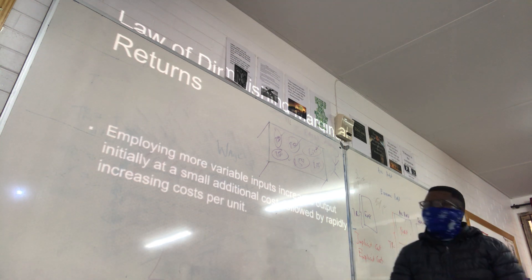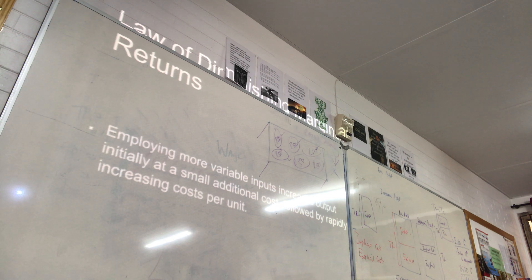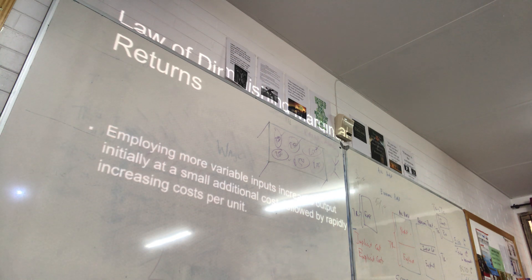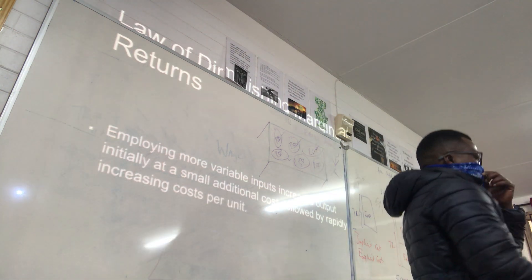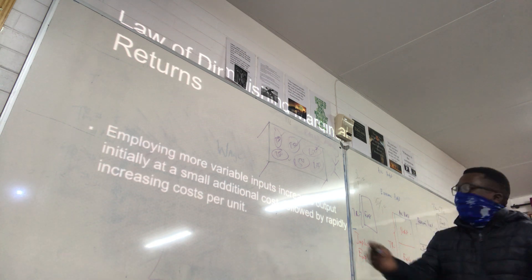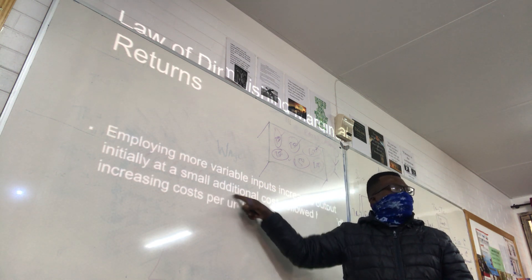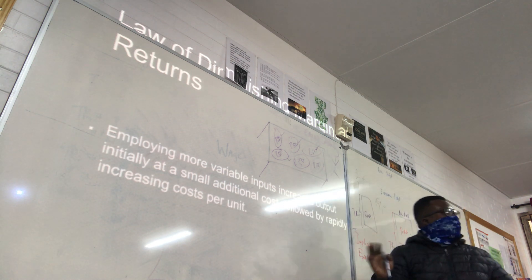A student asks: wouldn't it be better to hire a third person and make two hundred rand instead of one hundred? The answer is: when those extra people are hired, there's no space for them to braai, so we're paying them to stand and not do anything. As long as there's still space, adding more variable inputs works — there are more people braaiing at a small cost. But the moment it gets crowded, costs start increasing rapidly.